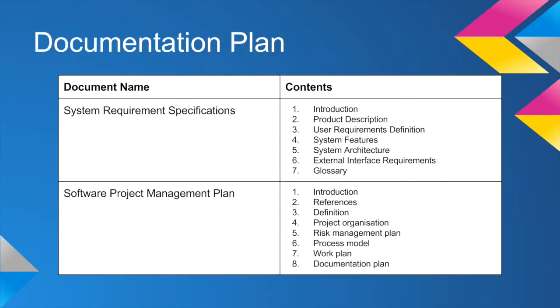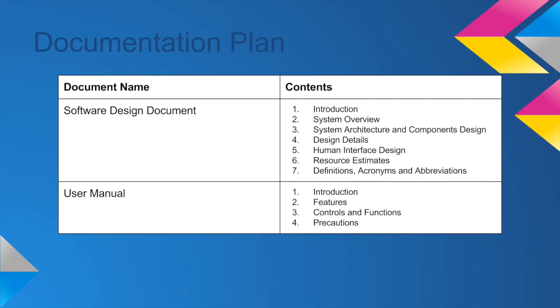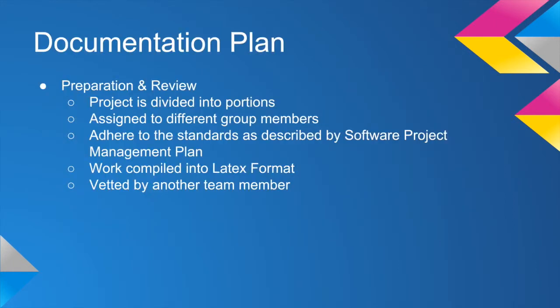The documentation plan has four main documents: system requirement specifications, software project management plan, the software design document, and the user manual as shown. How we prepare our documents is to have the document divided into portions and assign these portions to different group members. Group members are expected to adhere to the standards as described by the software project management plan, and at the end all work will be compiled into LaTeX format and vetted by another team member before submission.